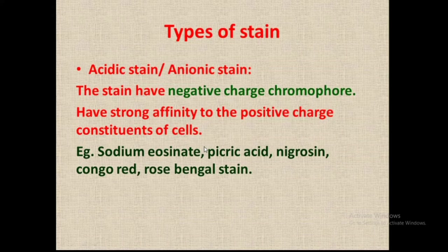Examples of acidic stains are: sodium eosinate, picric acid, negrosine, congo red, and rose bengal stain. These are all acidic stains or negative charge stains having a negative charge chromophore in their structure.